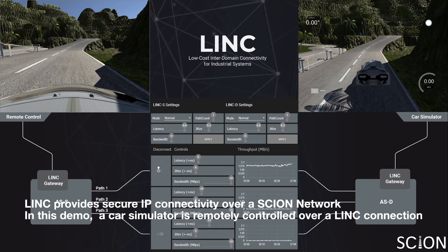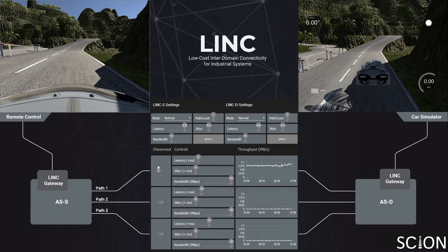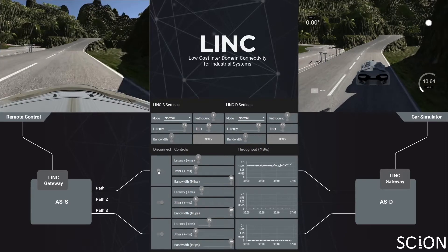To illustrate the capability of our solution, this demo presents a remote driving use case for LINK. A car simulator is remotely controlled over a LINK connection. The remote control sends control signals to the simulator, while the simulator sends back the video feed from a front-facing camera of the car.